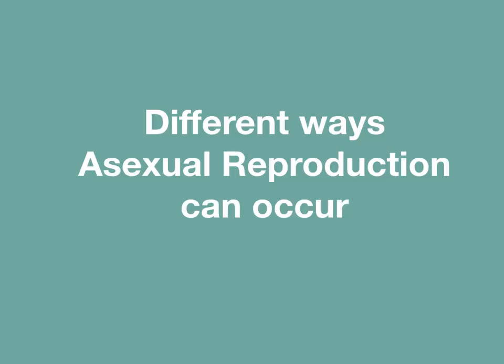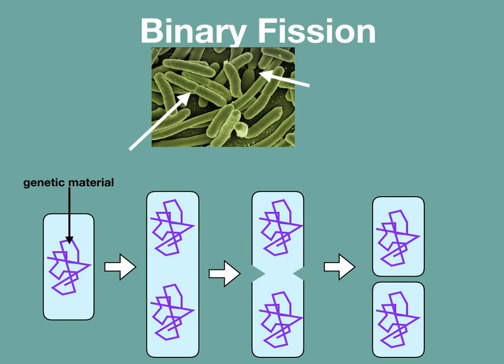There are different ways that asexual reproduction can occur. One way is through binary fission. This occurs mostly in single-celled organisms like bacteria. Genetic material gets copied and then the organism splits in half, creating two organisms that are identical to the original organism.